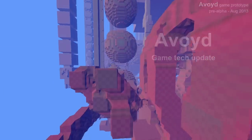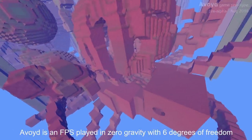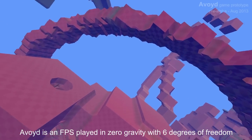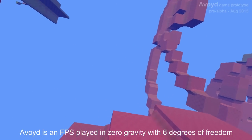Avoyd is a game which takes place in zero gravity, and you can move in six degrees of freedom. In other words, you can move in any direction - up, down, left, right, and rotate in all directions.